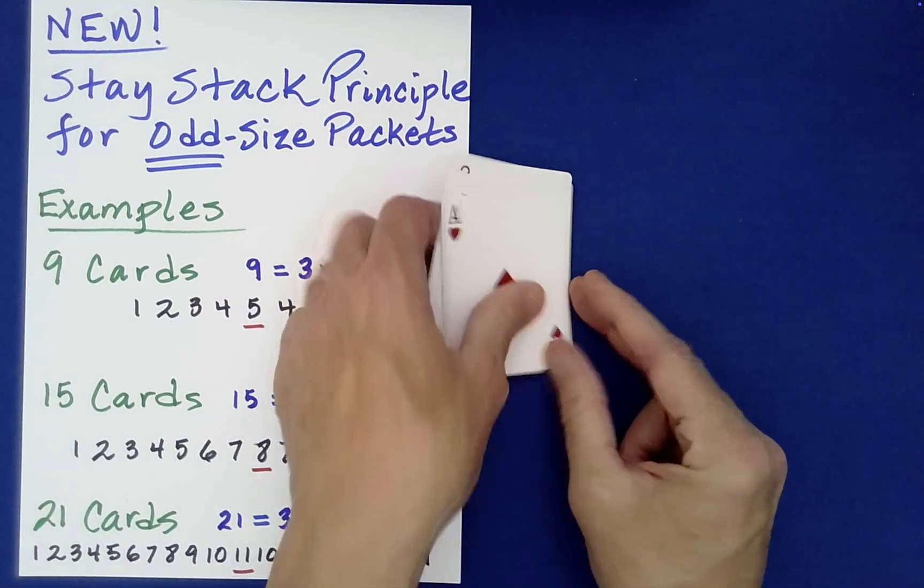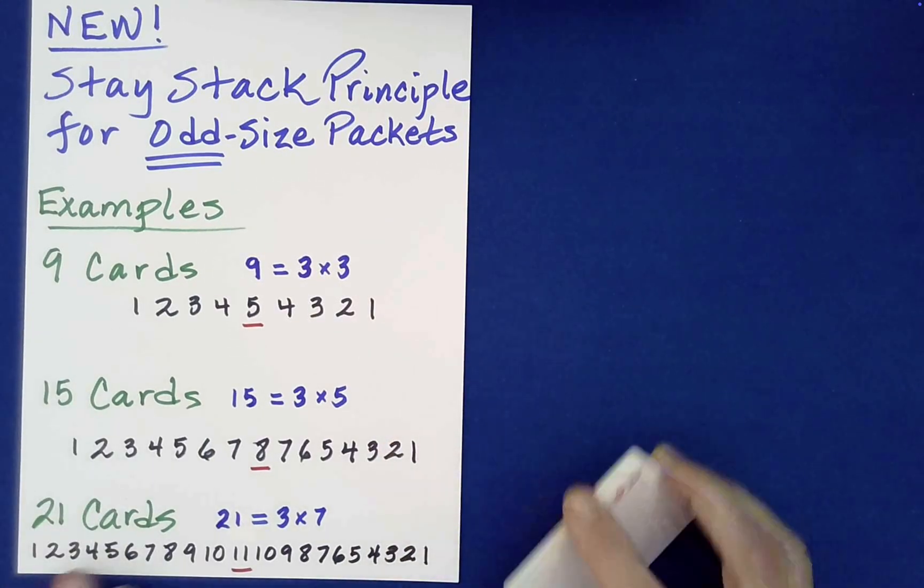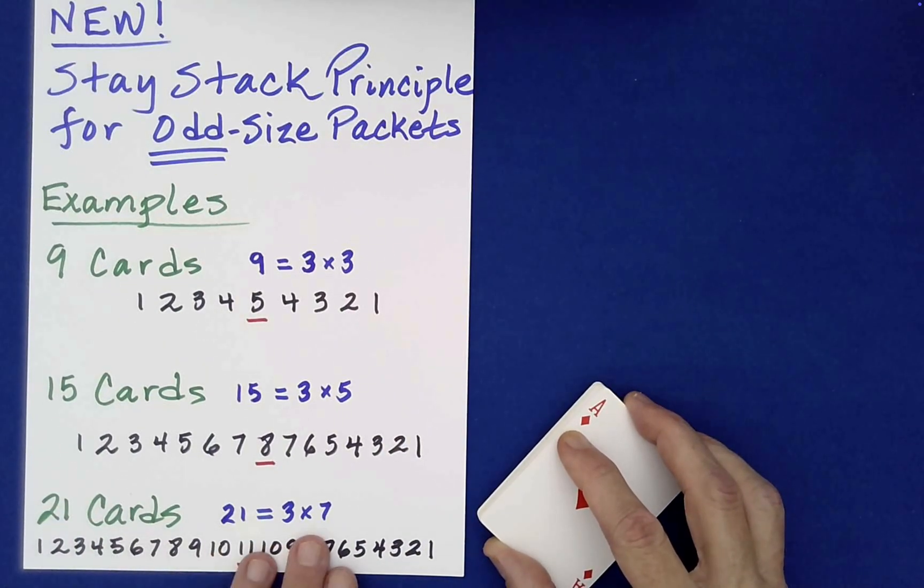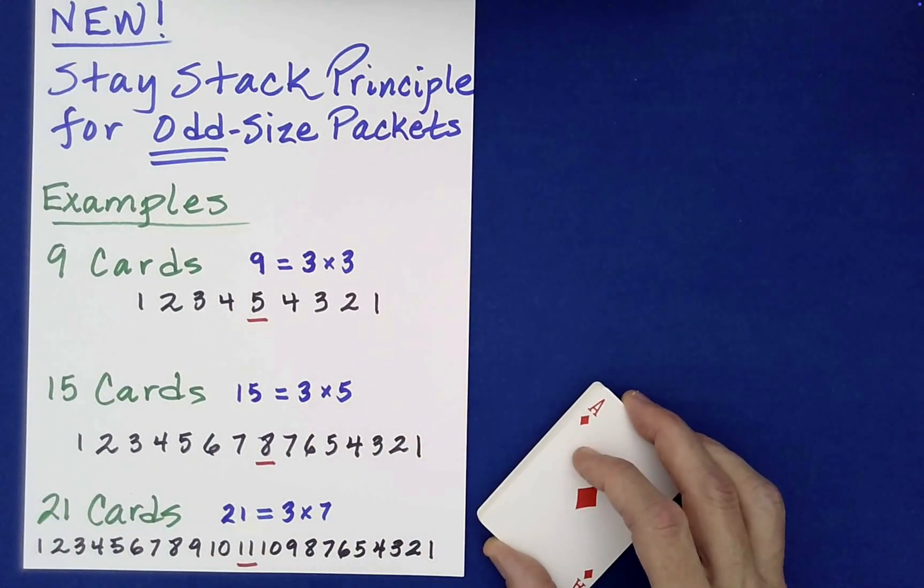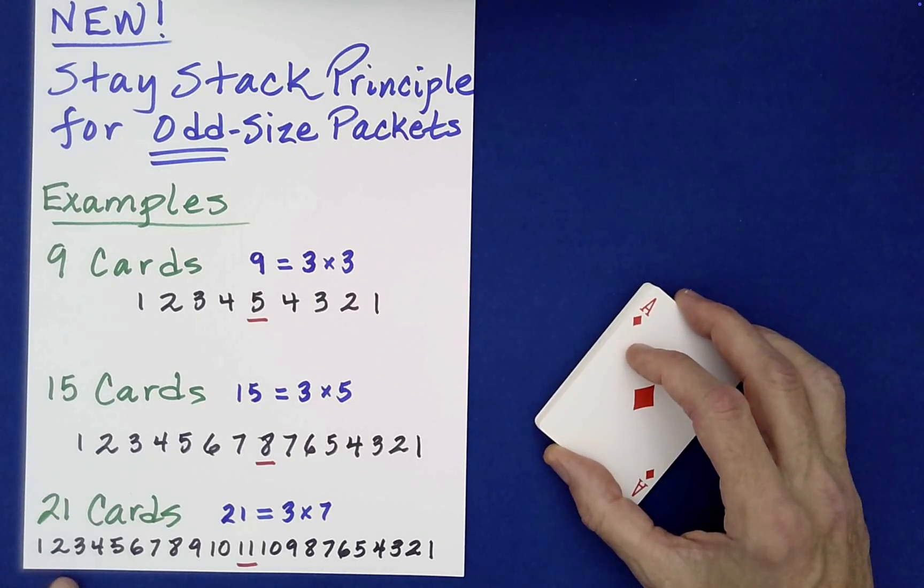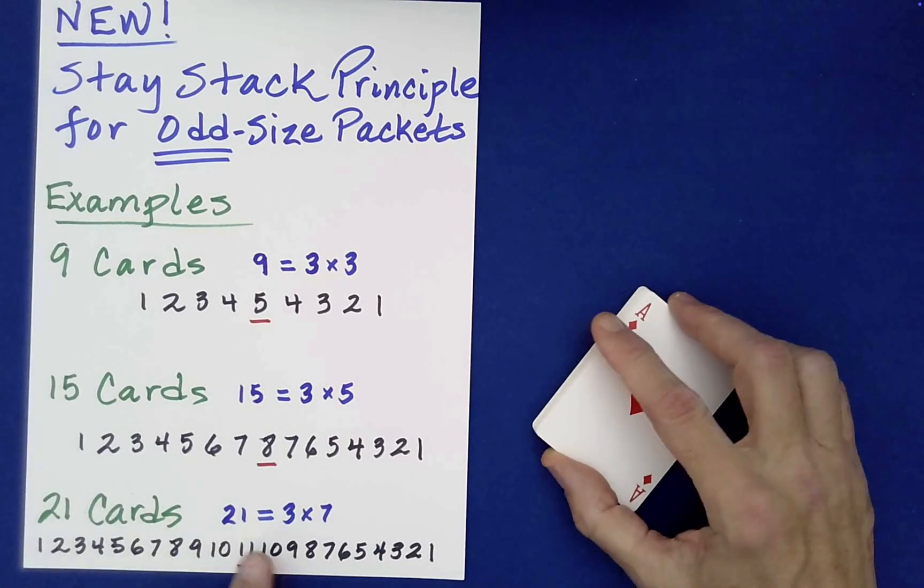So here I have a packet of 21 cards. I'll show you in a second. So that would be something like one through 10 and then like an 11. So I put a jack there and then 10, nine, eight, seven, all the way down to one. And then 21 factors as three times seven.